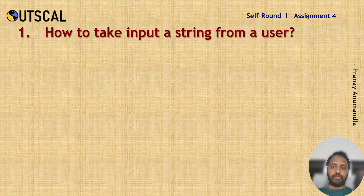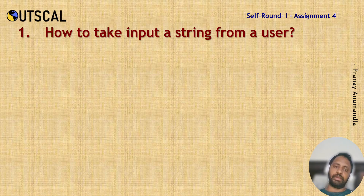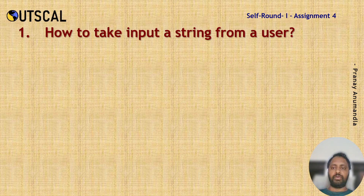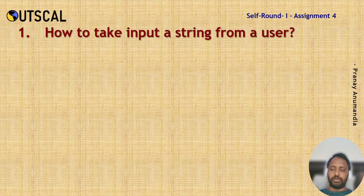How to take input a string from a user? It is simple — we have to take a string input. We have to declare a variable of string type and then use cin, which is an object of the std library namespace, and then use the variable name we already declared. The input given by the user will be stored in the variable, and we can also verify it by printing it out again.